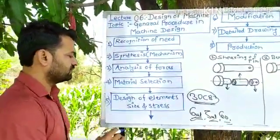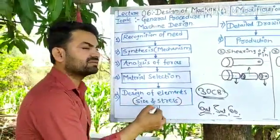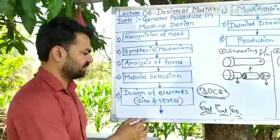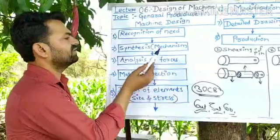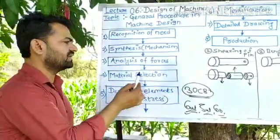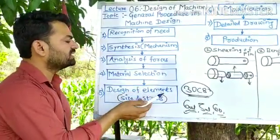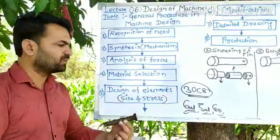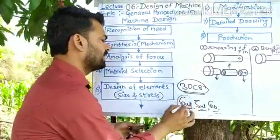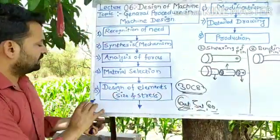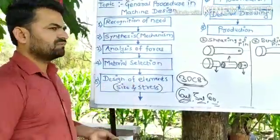The fifth step is design of the element — also called size and stress analysis calculation. At this point, the designer is aware of the need, the theory of machine perspective, which type of force acts on the component, and has selected material 30C8 with its corresponding stress values. Now the designer has to actually design the element.